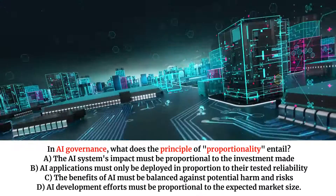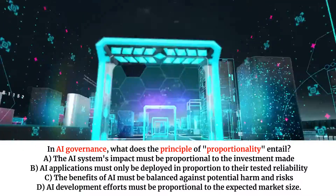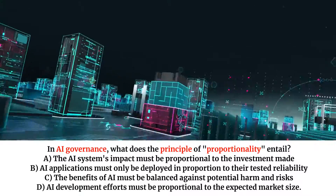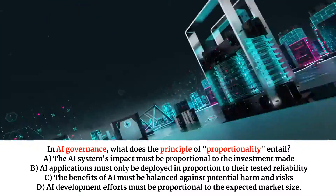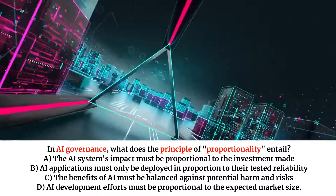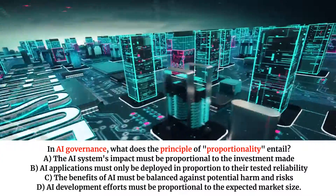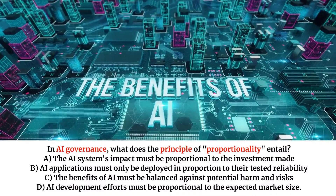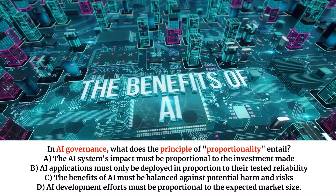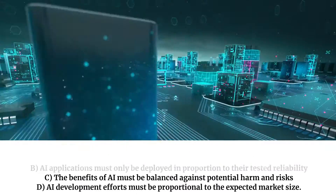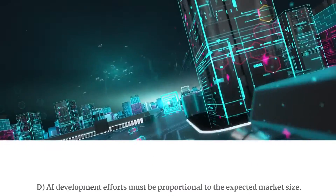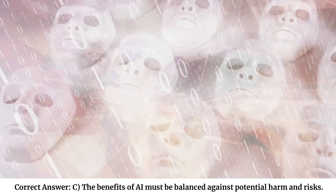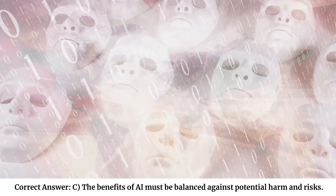In AI governance, what does the principle of proportionality entail? A. The AI system's impact must be proportional to the investment made. B. AI applications must only be deployed in proportion to their tested reliability. C. The benefits of AI must be balanced against potential harm and risks. D. AI development efforts must be proportional to the expected market size. Correct answer: C. The benefits of AI must be balanced against potential harm and risks.